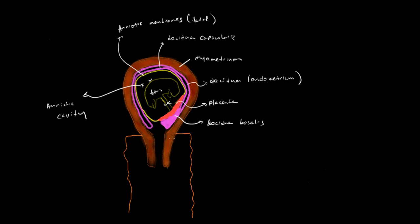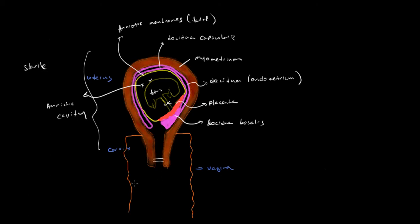This structure is the uterus, and this is the cervix, which is sort of the bottom of the uterus, and this is the vagina. It's important to point out that in pregnancy especially, this portion of the uterus — the uterus itself — is sterile. And often there's a mucous plug here, and the vagina is colonized by organisms. It's usually mixed organisms, and occasionally you have another organism called GBS, or group B strep.